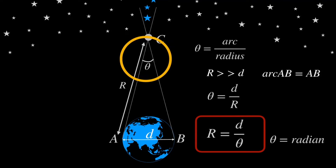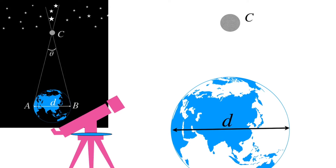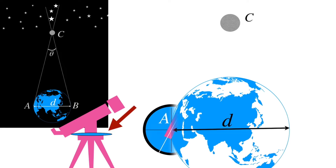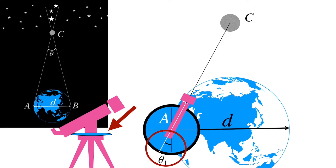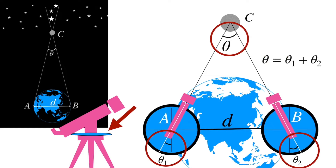But what about the parallax angle? Nowadays, we use a highly precise telescope integrated with an angle measuring scale to measure the parallax angle. For observation location A, the telescope's line of vision makes an angle theta-1 with the reference line on the angle measuring scale. For location B, it makes an angle theta-2. So the parallax angle is given by the sum of these two angles, theta-1 and theta-2.